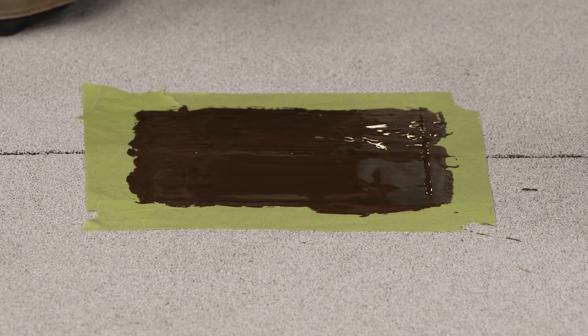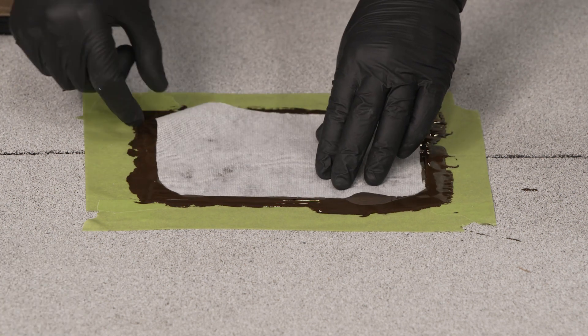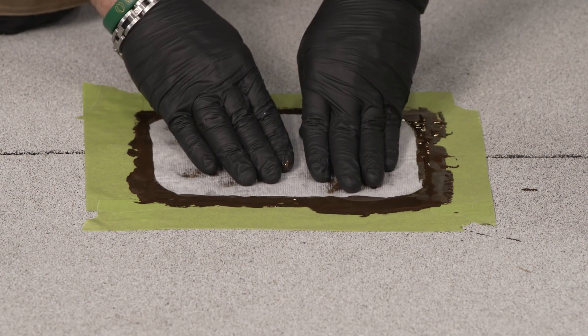While wet, lightly press in a prepared SmartFab polyester reinforcement, extending 3 inches beyond the deficiency.